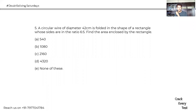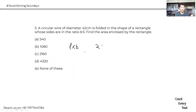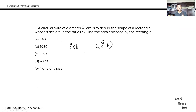A circle of diameter 42 cm is folded into the shape of a rectangle whose sides are in the ratio 6:5. Find the area enclosed by the rectangle. The wire length doesn't change, so the circumference of the circle equals the perimeter of the rectangle. Circumference = π×d = (22/7)×42 = 132 cm.